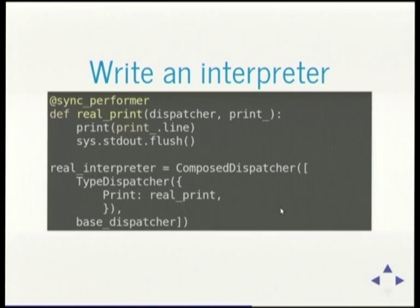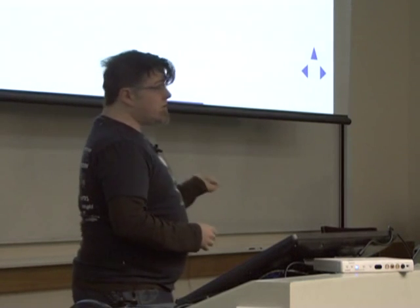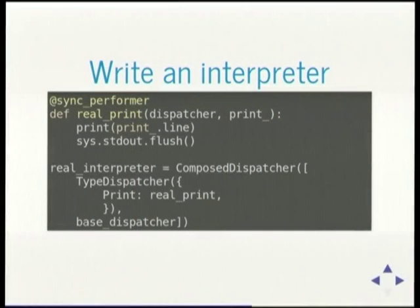This print-and-flush is my actual implementation of the print intent — the thing that evaluates it. The interpreter object is a composed dispatcher that takes intents or effects and hands them off to executors and glues it all together. TypeDispatcher does that based on the type of the object. You can also write your own dispatchers — for example to glue it onto async IO or Tornado. It comes with a synchronous thing and a Twisted thing, and it's very easy to port to many different frameworks like Eventlet.